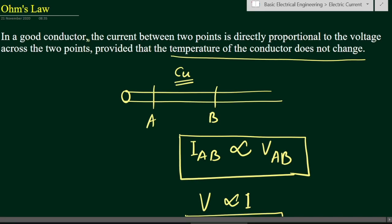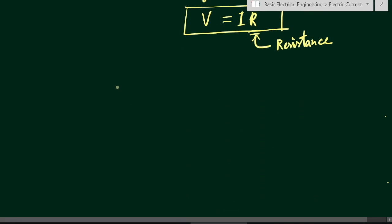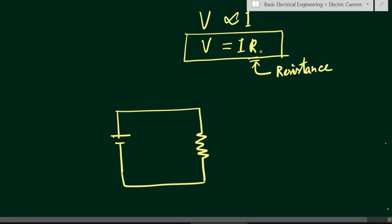To understand: in a good conductor, the current between two points A and B is directly proportional to the voltage across them — V_AB means V_A minus V_B. Now, for the application of Ohm's Law, let us take an example. Suppose we have a voltage source and a resistance, and we have obtained the expression V = IR from Ohm's Law.